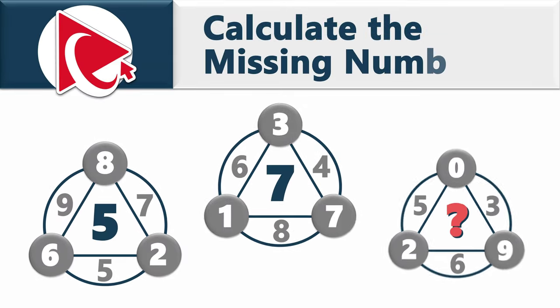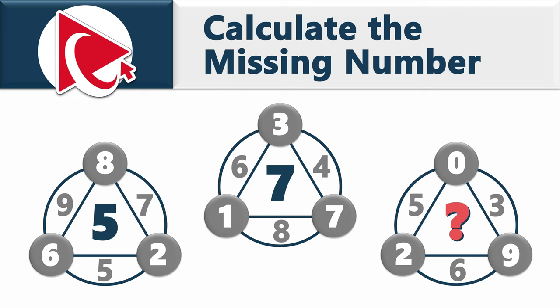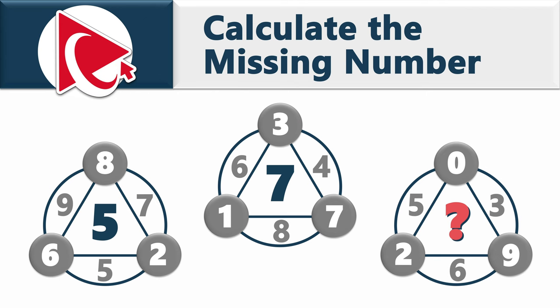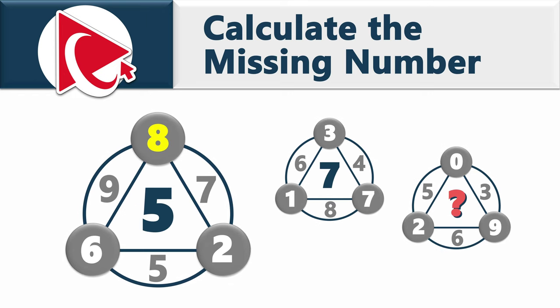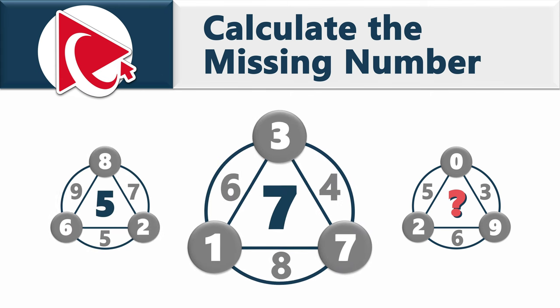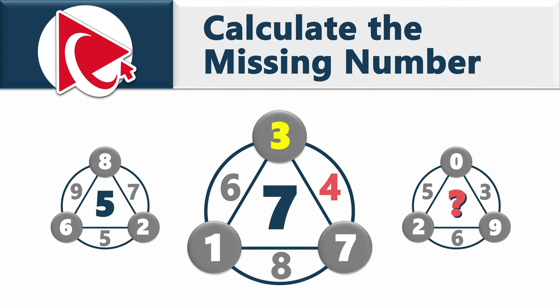You're presented with three shapes. Each shape has seven numbers inside. The first shape has numbers 8, 7, 2, 5, 6, 9, and number 5 in the middle. The second shape has numbers 3, 4, 7, 8, 1, 6, and number 7 in the middle.